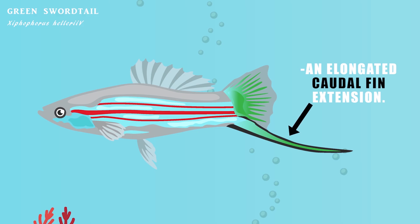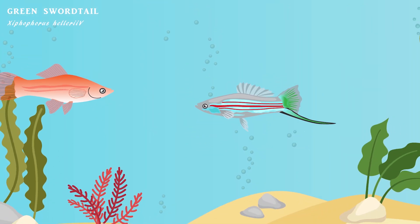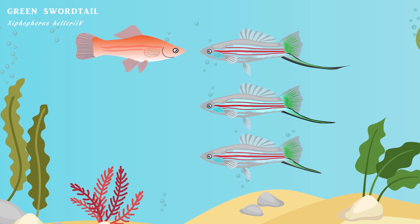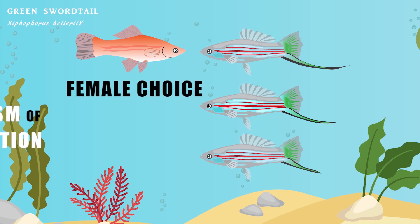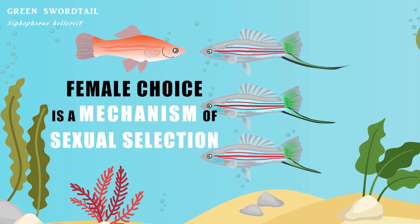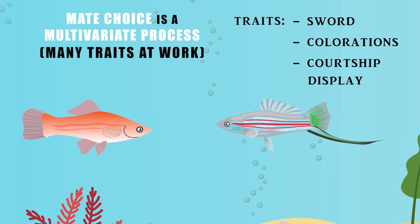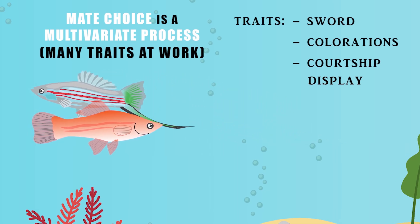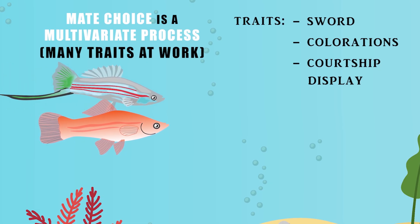Let's take a male of the green swordtail species. This elongated lower caudal fin extension, commonly called a sword, exists as an elaborate ornament to attract females during courtship displays. Males with longer swords are more appealing to females, and males with longer swords are more likely to attract a female for mating. The long tail is a trait being selected upon by sexual selection — this is female choice, and female choice is a mechanism of sexual selection. And it's important to remember that sexual selection is a multivariate process — there's usually not just one trait involved in reproductive success, but many. Within swordtails, besides the sword, other traits are at work, like the male's colorations and even a courtship display, which is considered a behavioral signal also being analyzed for choice by the female.